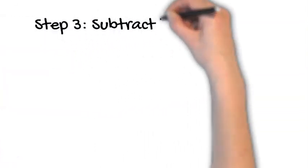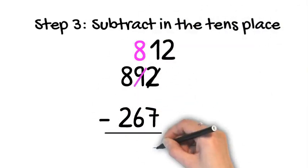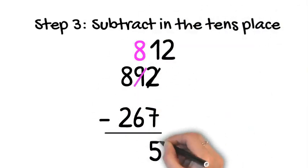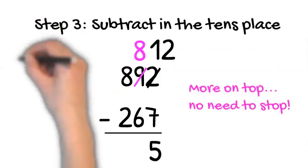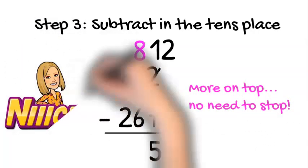Step 3. Now we're ready to subtract in the tens place. So now, we have 8 take away 6. Is that more on top, or more on the floor? You're right, it's more on top, no need to stop. We can just subtract. 8 take away 6 is 2.